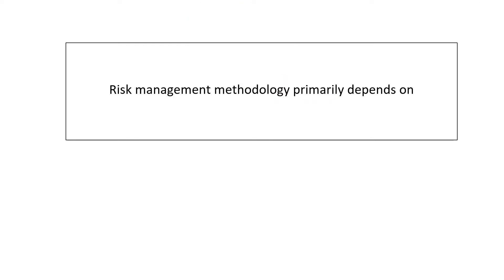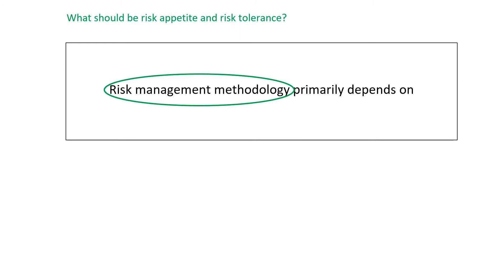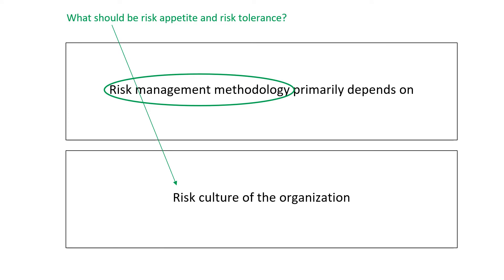Risk management methodology depends on certain main factors. What should be the risk appetite and what should be the risk tolerance? This risk appetite and risk tolerance is basically derived from the risk culture of the organization. So, risk management methodology depends on the risk culture of the organization.